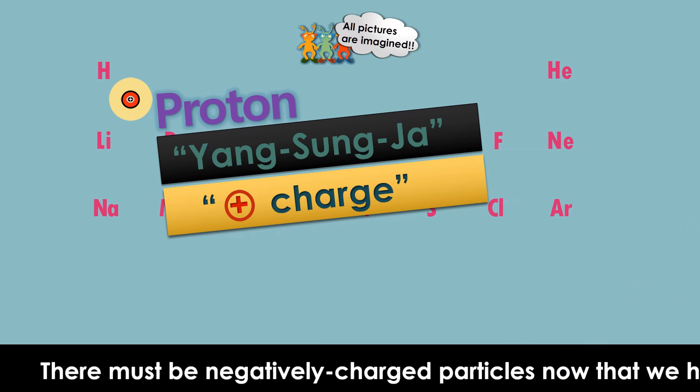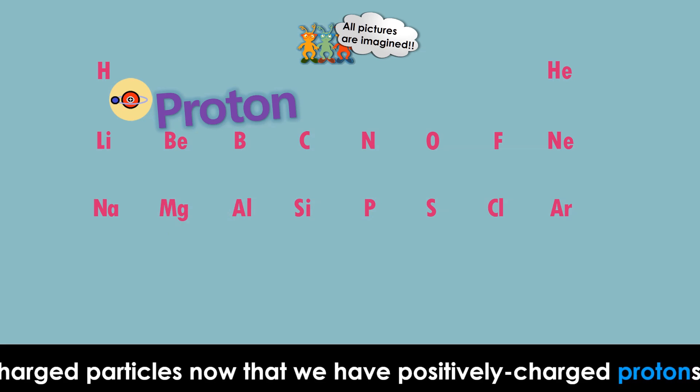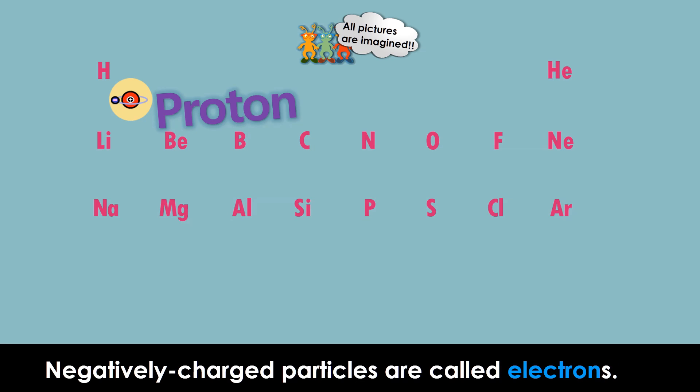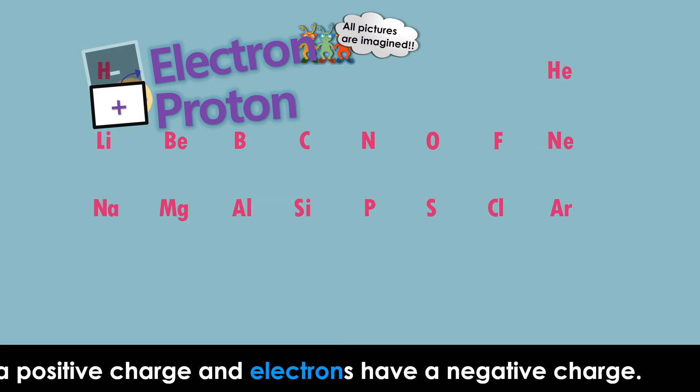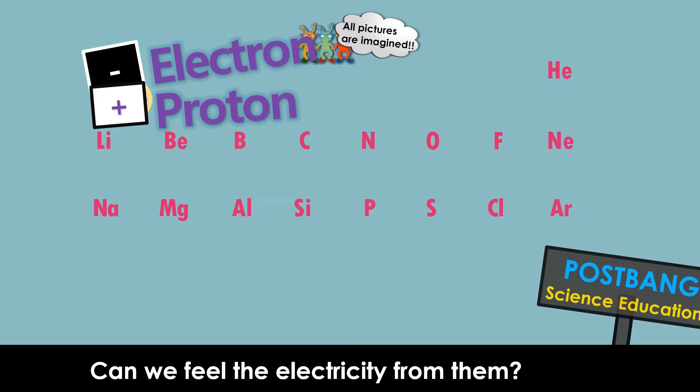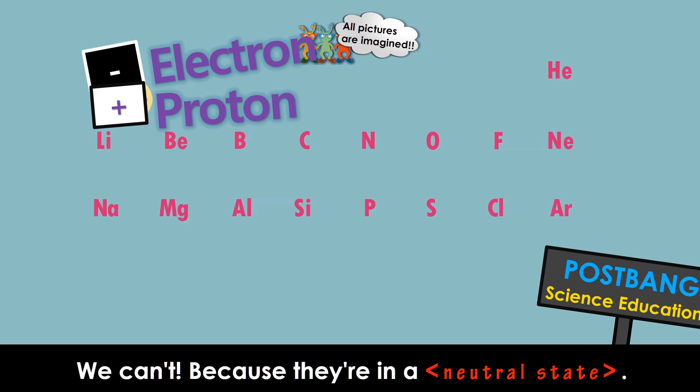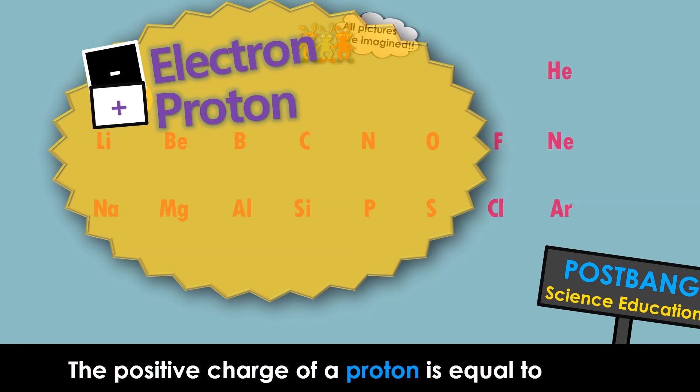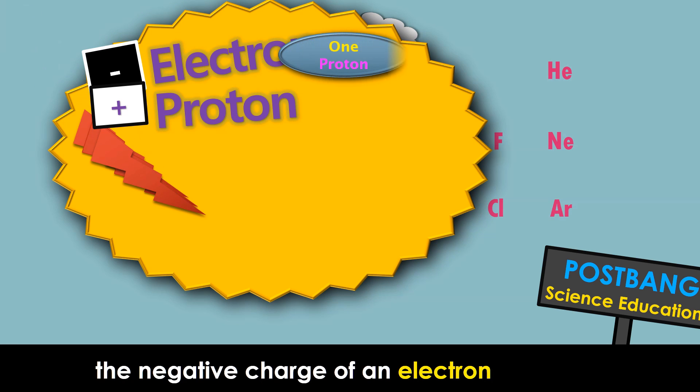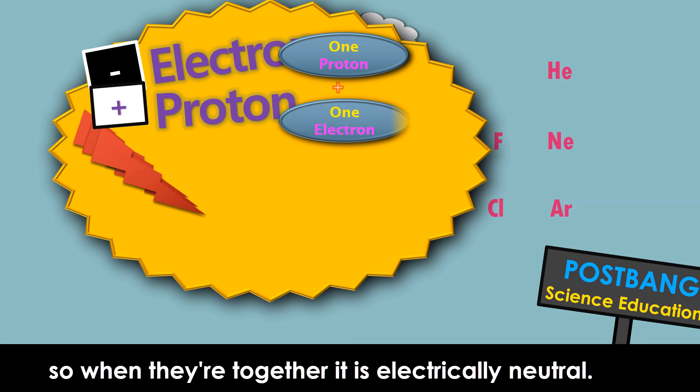There must be negatively charged particles now that we have positively charged protons. Negatively charged particles are called electrons. Protons have a positive charge, and electrons have a negative charge. Can we feel the electricity from them? We can't, because they're in a neutral state. The positive charge of a proton is equal to the negative charge of an electron. So when they're together, it is electrically neutral.